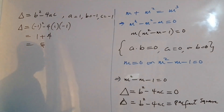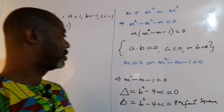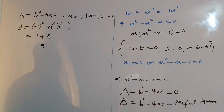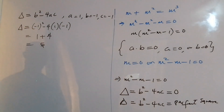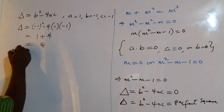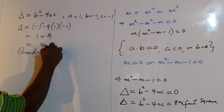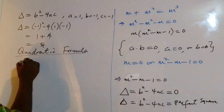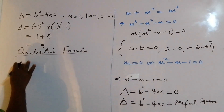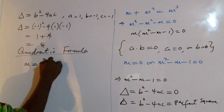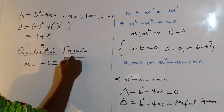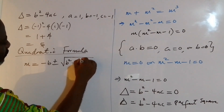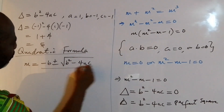Now, 5 is not a perfect square, therefore this quadratic equation does not have linear factors. So to find the roots, we use the quadratic formula: m equals negative b plus or minus the square root of b squared minus 4ac, all over 2a.